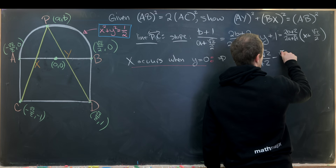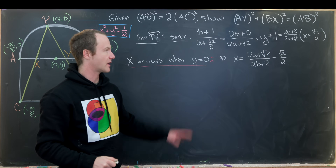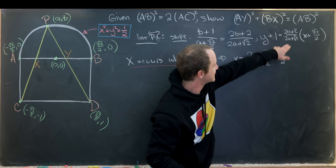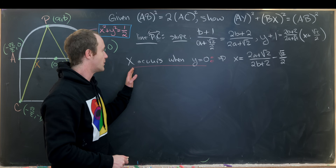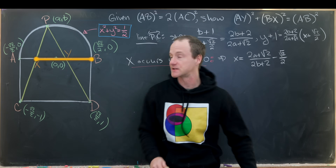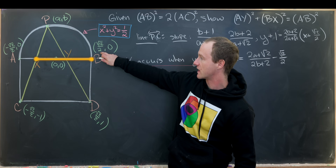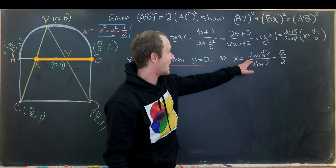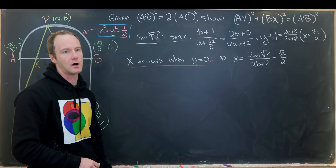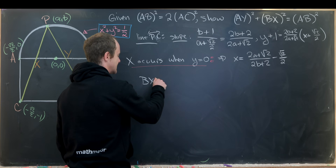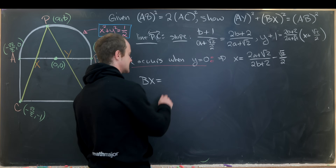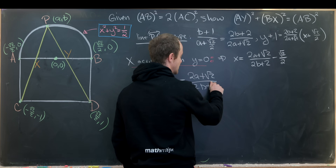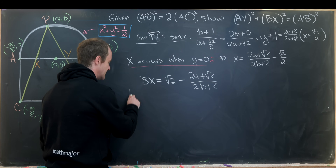So the x-coordinate of X is (2A + √2) / (2B + 2) − √2/2. What we really want is the distance from B to X. Since B has x-coordinate √2/2, we compute BX = √2/2 minus that x-coordinate, which gives BX = (√2 − 2 + A√2) / (2B + 2).